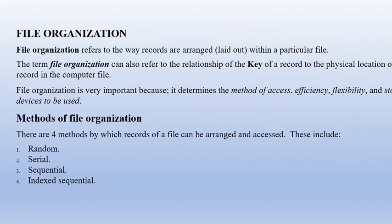File organization refers to the way records are arranged or laid out within a particular file. It can also refer to the relationship of the key of a record to the physical location of that record in the computer file. File organization is very important because it determines the method of access, efficiency, flexibility, and storage devices to be used. There are four methods by which records of a file can be arranged and accessed: random file organization, serial file organization, sequential, and indexed sequential file organization.